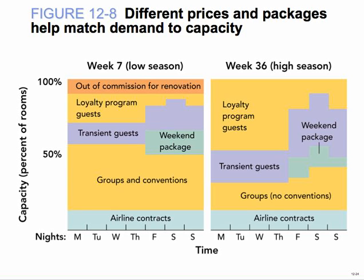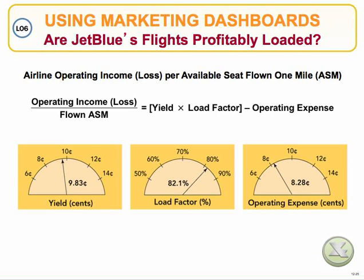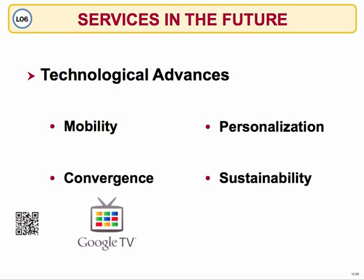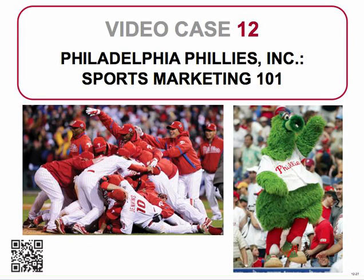Capacity management: this is why it's cheaper to go to a theater on off nights or at a matinee. That's how they manage demand — they try to get you there at off-peak times to utilize capacity, because they've got to be open anyway. Okay, that's all for Chapter 12. Enjoy reading it and do your best. Thank you very much.